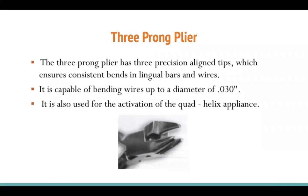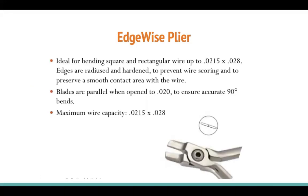The three-point plier is a useful plier used to make retainer wires. It has three precision-aligned tips which ensure consistent bends in lingual bar and wires. It is capable of bending wire up to 0.03 inches in diameter. It is also used for activation of the quad helix appliance — so it can be used both for making retainer wire and for quad helix activation.